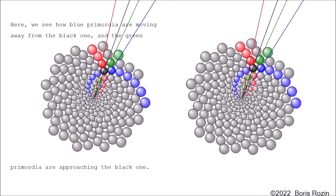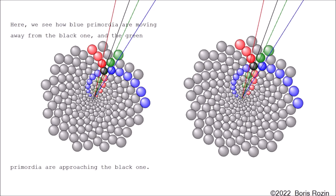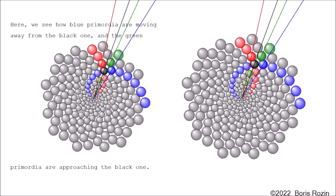Here we see how blue primordia are moving away from the black one, and the green primordia are approaching the black one.